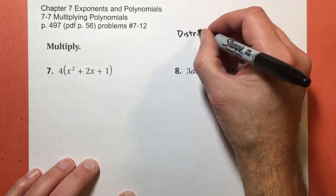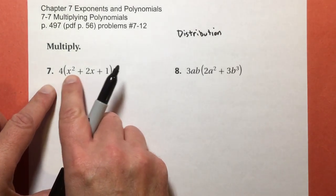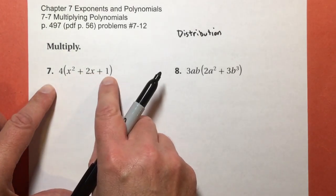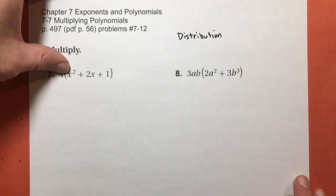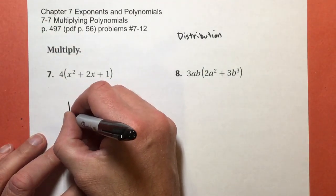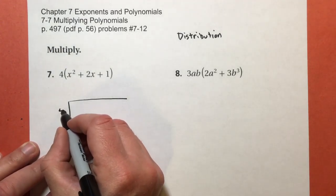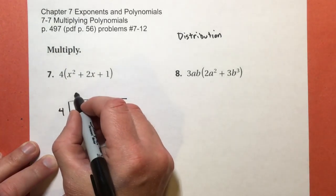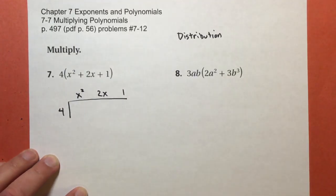Distribution comes from the word to distribute, which means to share. So I'm going to share that four with the x squared, with the 2x, and with the one. However, when we learn algebra for the first time, sometimes it's easier if we organize our thinking. So I think it'd be better if I drew it like this. So I'm going to put my 4 over here on the left, and my x to the second power, my 2x, and my 1 right there.